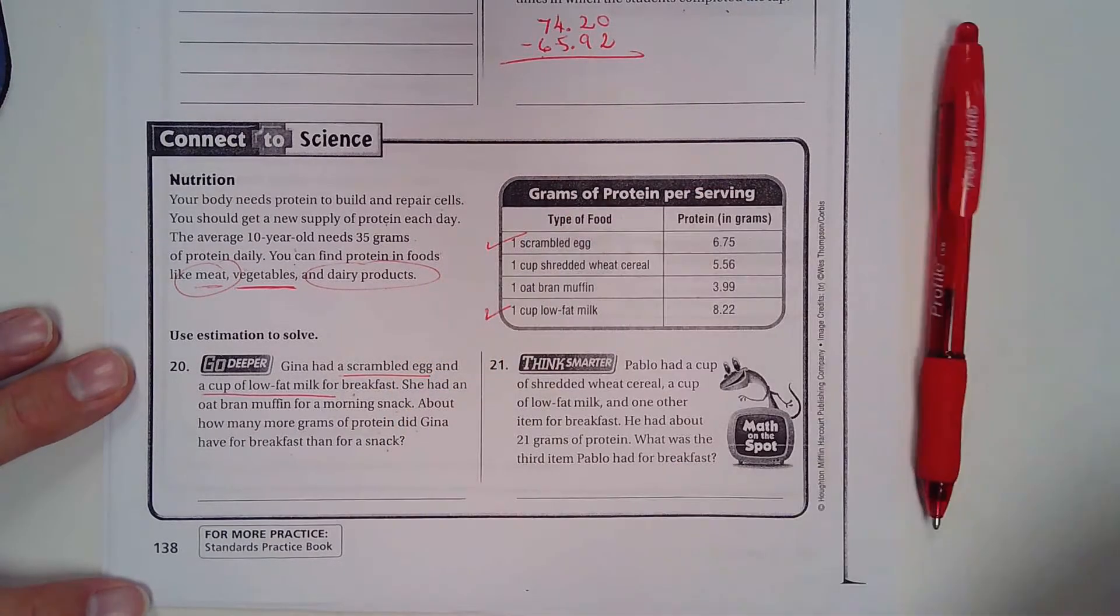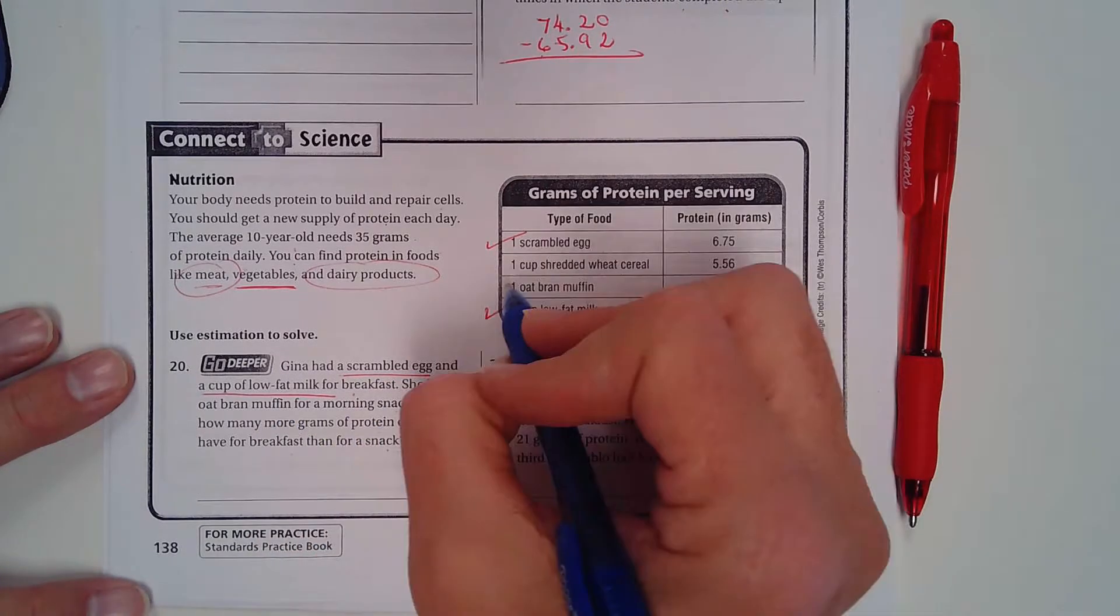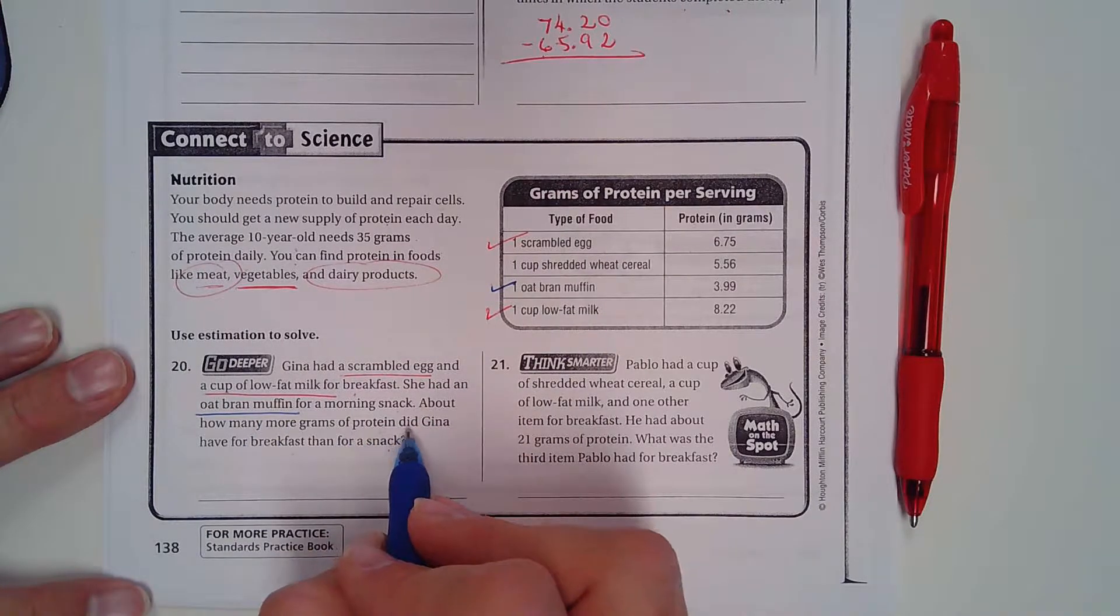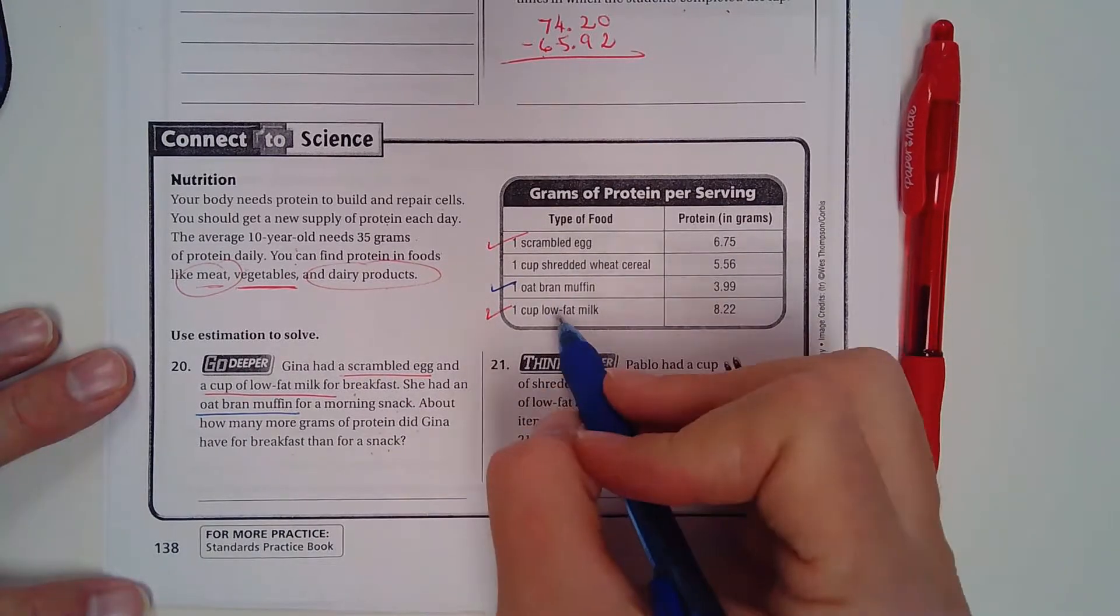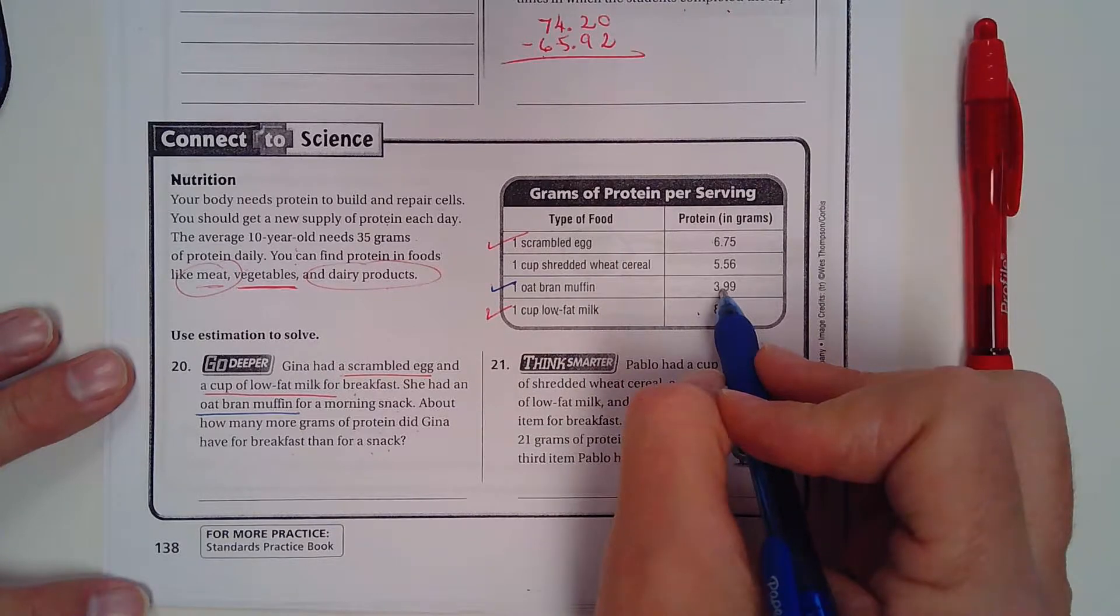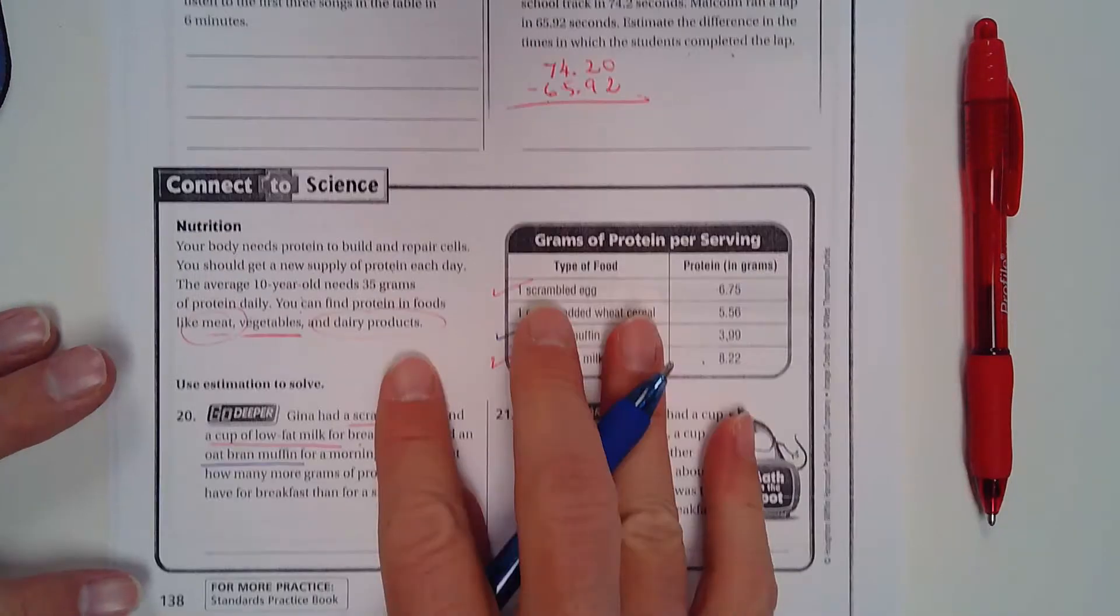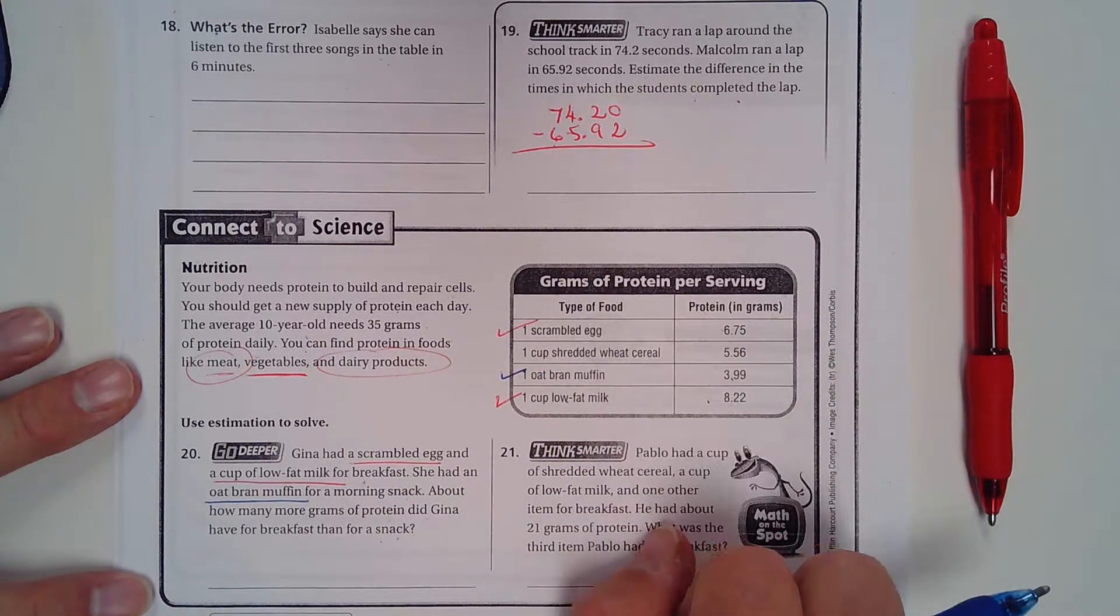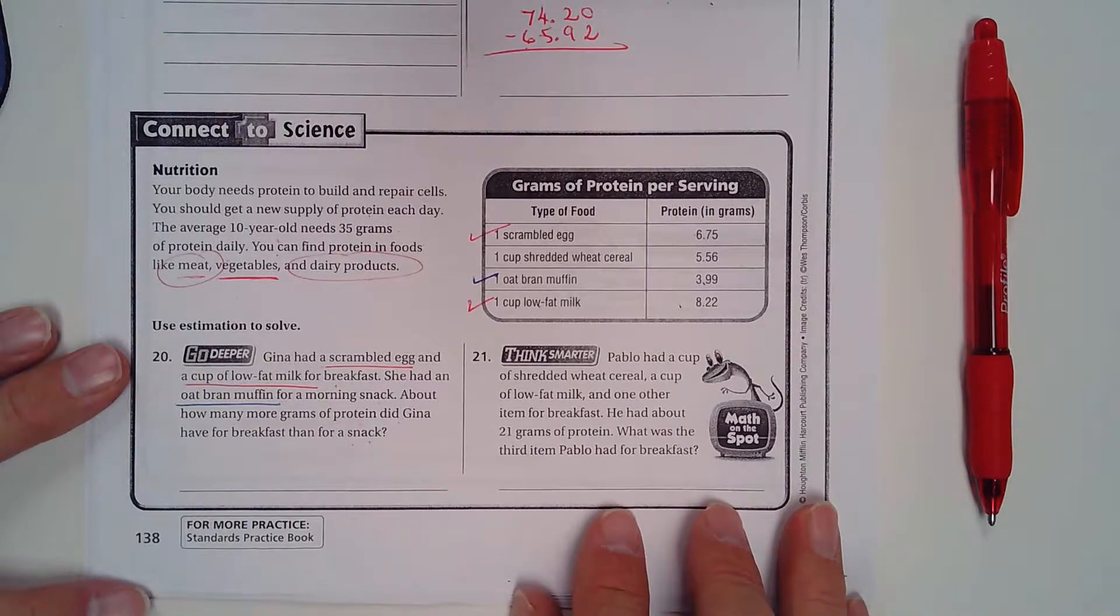And then for her morning snack she had an oat bran muffin. About how many more grams of protein did Gina have for breakfast than for a snack? Well, figure out how much protein she had for breakfast and how much protein she had for a snack and figure out the difference. So again, you're going to be subtracting the difference, but do your addition first for the two items she had for breakfast. And then Pablo...